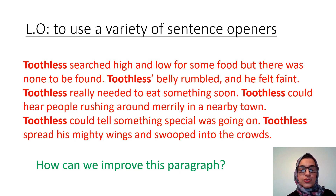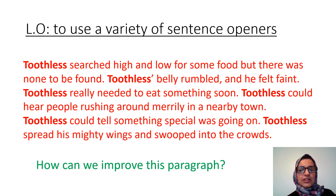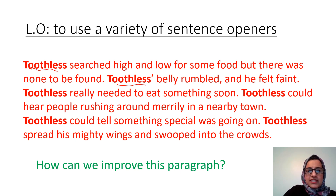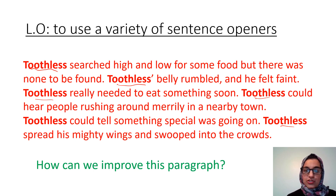Bear in mind our learning objective is to use a variety of sentence openers. In this paragraph: 'Toothless searched high and low for some food, but there was none to be found. Toothless's belly rumbled and he felt faint. Toothless really needed to eat something soon. Toothless could hear people rushing around merrily in a nearby town. Toothless could tell something special was going on. Toothless spread his mighty wings and swooped into the crowds.' Hopefully you'll recognise this is not a very good paragraph — every sentence starts with the character's name: Toothless, Toothless, Toothless. It's boring. Please do not use the character's name to start every sentence.